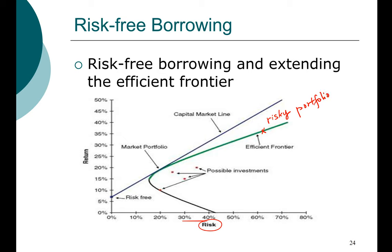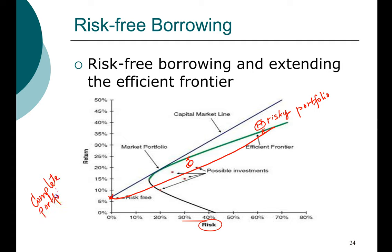Now an investor, instead of having to choose a highly risky portfolio or a slightly lower-risk portfolio — say a high-risk portfolio H and a low-risk portfolio L — has even more choices. Investors can put some money in the risk-free return and some money in a risky portfolio. By doing that, they create what we call a complete portfolio. In the complete portfolio, an investor puts some money in a risk-free asset and some money in the risky asset.